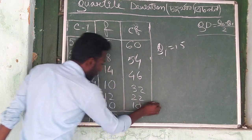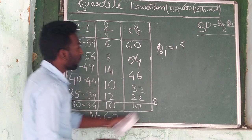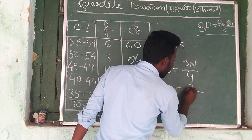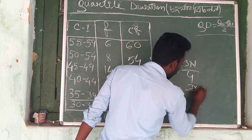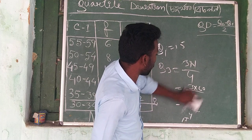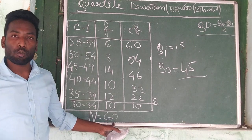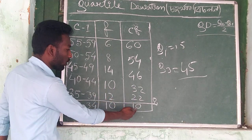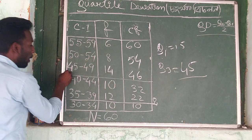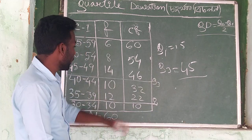So we add Q3 to the formula: 3n by 4. 3n by 4 means 3 times 60 by 4, which is 180 by 4, which means 45. Quarter 3 means 45. Quarter 1 means 15.